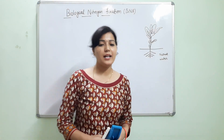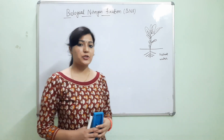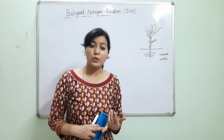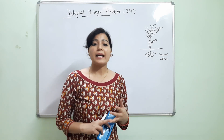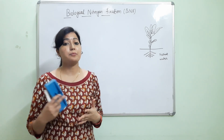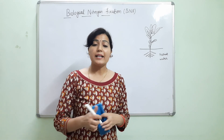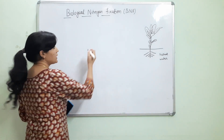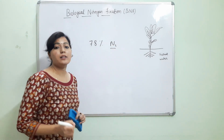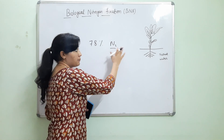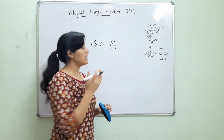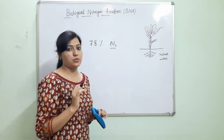Hello friends, welcome to my YouTube channel. I am Pooja Bhatt and today our video lecture topic is biological nitrogen fixation. Nitrogen is a macro primary or very essential element for plants. It helps in the synthesis of amino acids, proteins, chlorophyll, and nucleotides. The concentration of nitrogen in the atmosphere is around 78% in molecular or elemental form, but plants can't uptake this form of nitrogen.